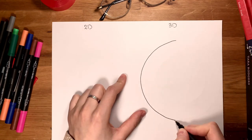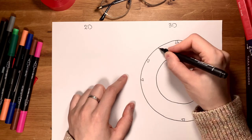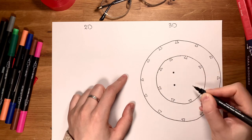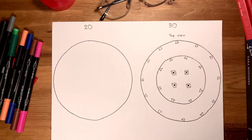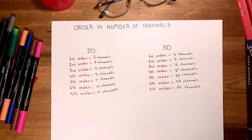In ambisonics, we can work with 2D and 3D formats depending on the speaker configuration. 3D ambisonics can be played back by a speaker array that, besides the main horizontal ring, also has an additional layer or layers of speakers at height. When there is only one horizontal ring of speakers, we decode to 2D ambisonics. The same order in 2D and 3D formats consists of different numbers of audio channels, because in 2D, vertical spherical harmonics are removed. Here you can see the table of orders and corresponding channel numbers in both 2D and 3D formats.